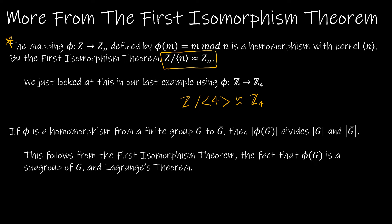Another result: if phi is a homomorphism from a finite group G to G bar, then the order of phi(G) divides the order of G and of G bar. This follows from the first isomorphism theorem, the fact that phi(G) is a subgroup of G bar, and Lagrange's theorem, which says any subgroup's order must divide the order of the group.